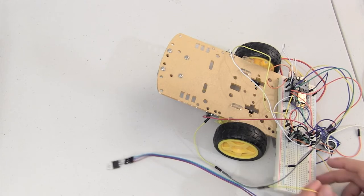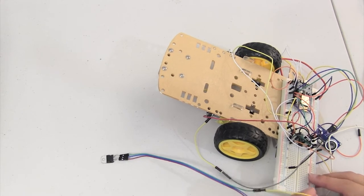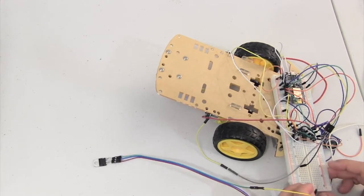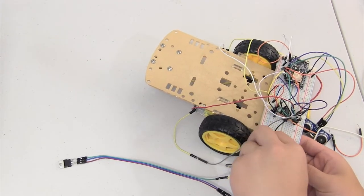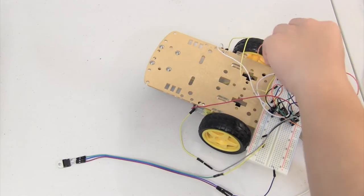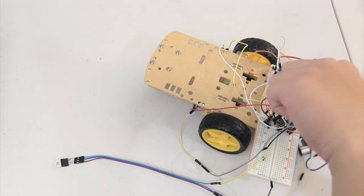So the green one will go to the positive. I'm just going to put it on the breadboard somewhere, and then the ultrasonic sensor can connect to it first. So the ultrasonic sensor wire.